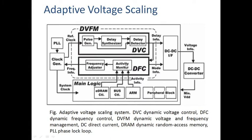This is the functioning of dynamic voltage scaling on-chip. For dynamic frequency scaling on-chip, we have an activity monitor and a frequency adjuster. The activity monitor gets signals from the main logic. According to those signals, the frequency adjuster will adjust the frequency and generate a particular frequency.